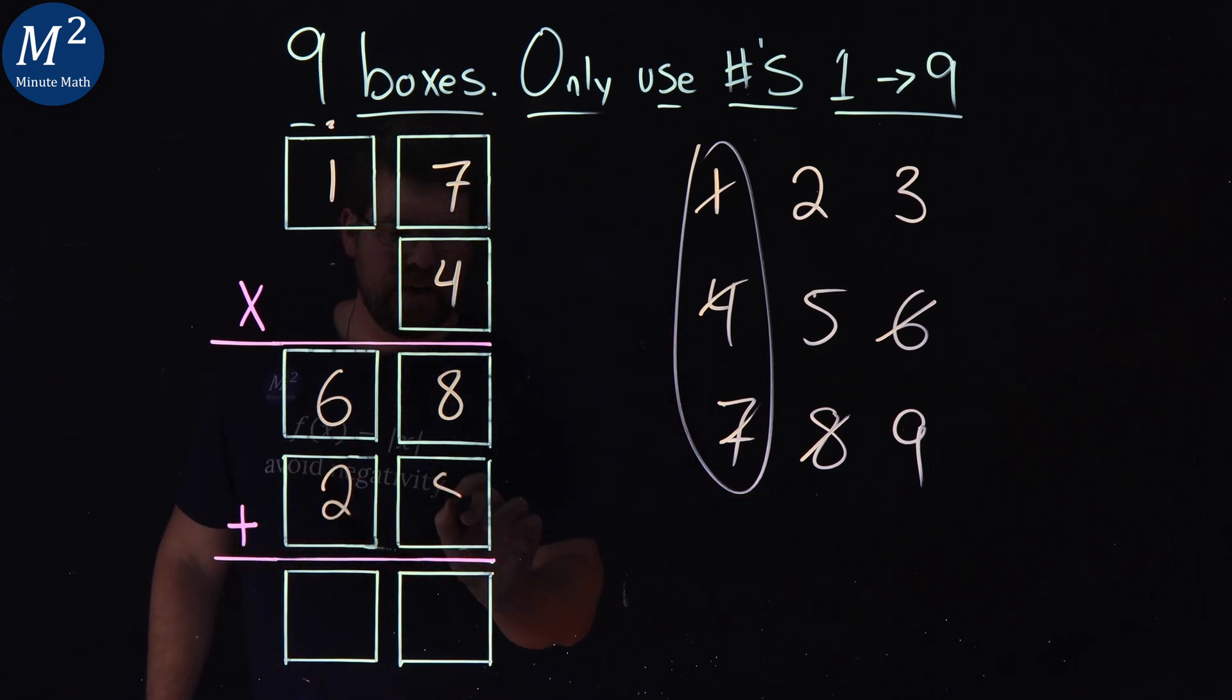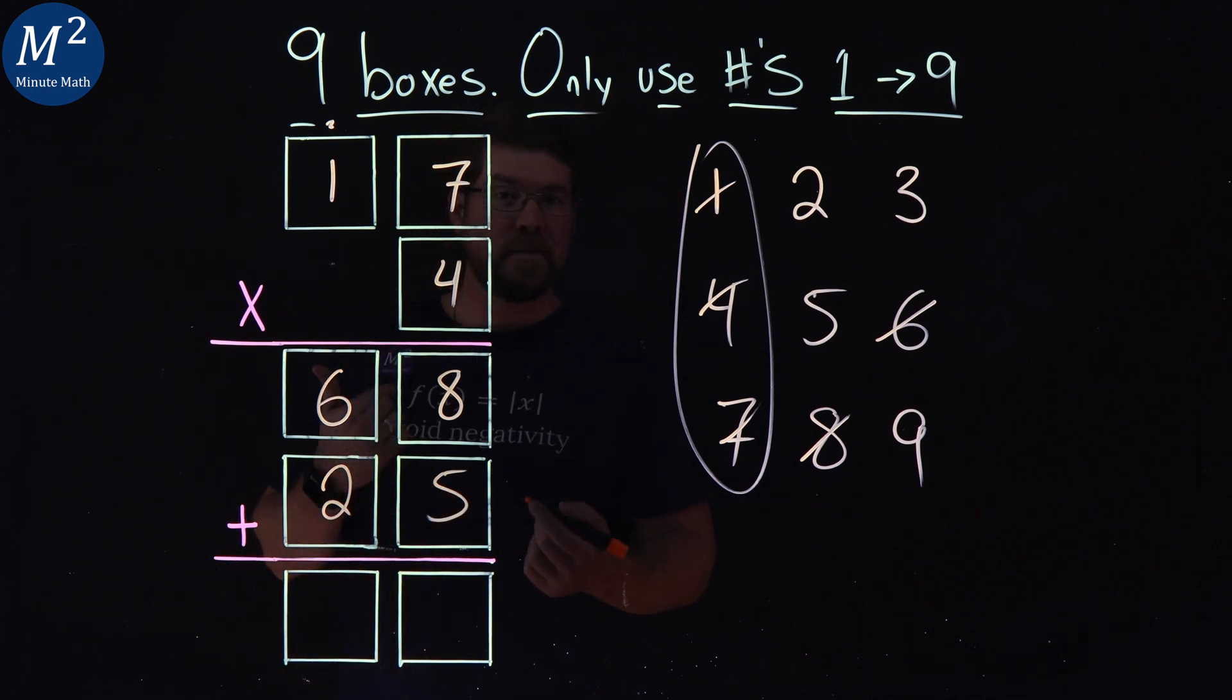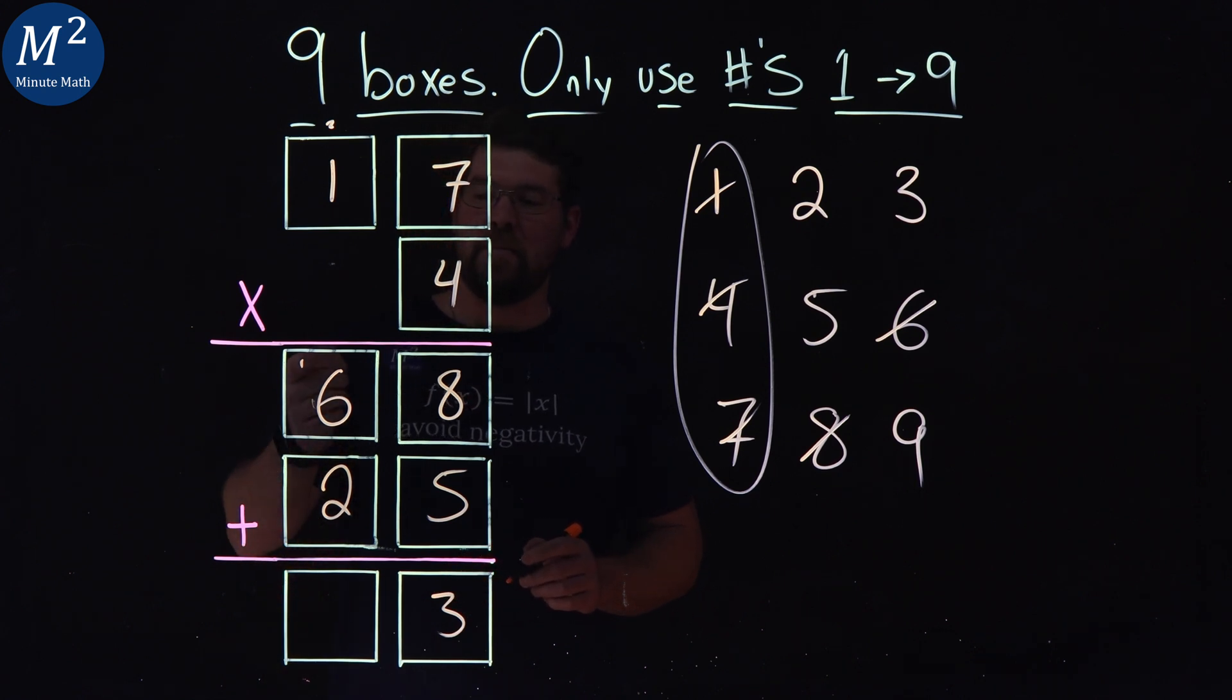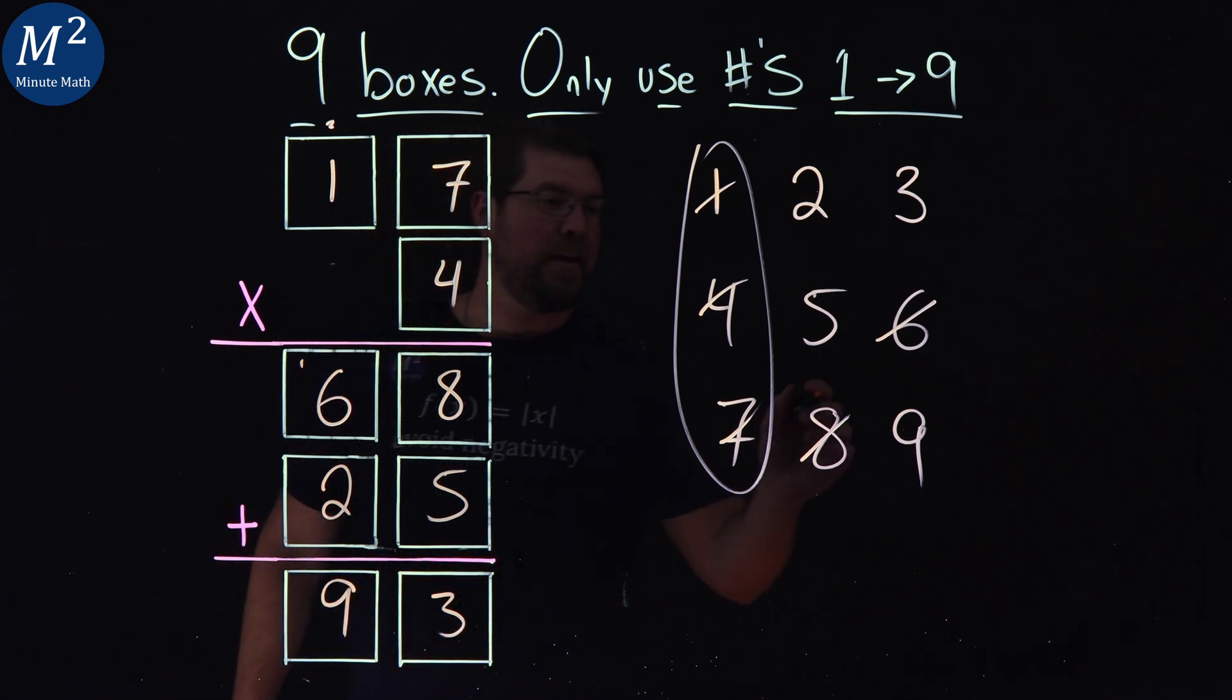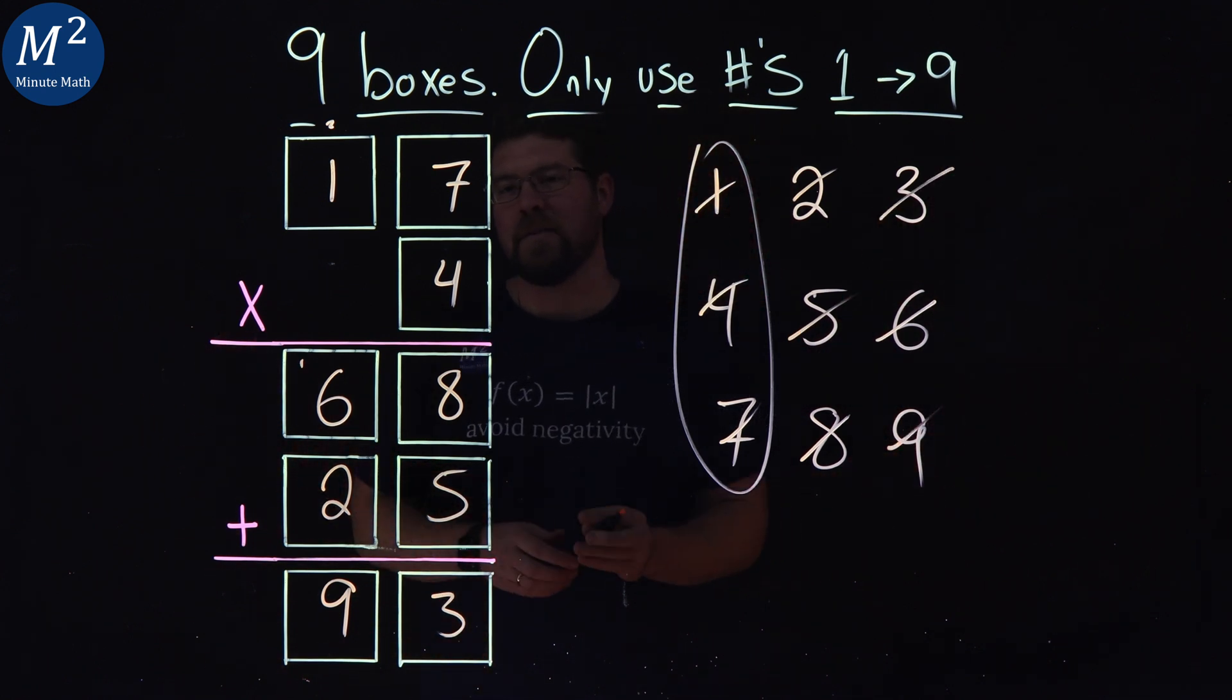Two and a five. Eight plus five gives me that 13, three carry the one. And six and two. Eight plus one is nine. And two, five, nine, three. And there's our answer.